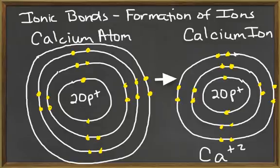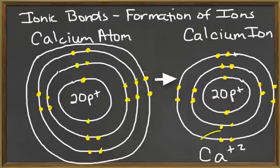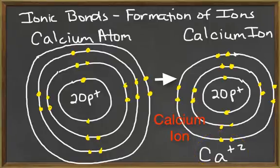An atom that loses two electrons becomes a cation with a charge of plus two. For example, a calcium atom has 20 electrons. Two electrons occupy its outermost energy level. To become stable, it will lose these two electrons. By losing two negatively charged electrons, it becomes more positive with a charge of plus two, and will be called a calcium ion.